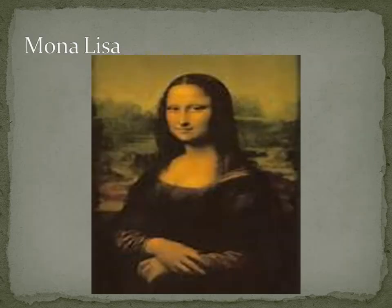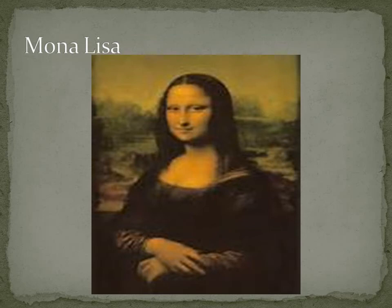The Mona Lisa was painted in 1503 in oil on panel. This painting is also known as La Gioconda, and is a portrait of Lisa d'Antonio Maria Gherardini. The Mona Lisa is about the fashion of the time and nobility, and it is Leonardo's most famous painting to this day.